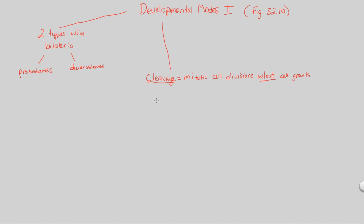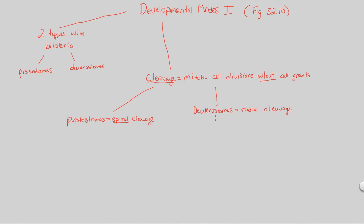There are two types of cleavage patterns that protostomes and deuterostomes undergo respectively. On the protostome side, protostomes undergo spiral cleavage — that's the key to remember: protostome equals spiral cleavage. Deuterostomes, on the other hand, undergo radial cleavage. As a point of emphasis, do not confuse radial cleavage with radial symmetry — they are two completely separate things. Protostomes undergo spiral cleavage; deuterostomes undergo radial cleavage, not radial symmetry, because they're already classified as bilaterally symmetric organisms.